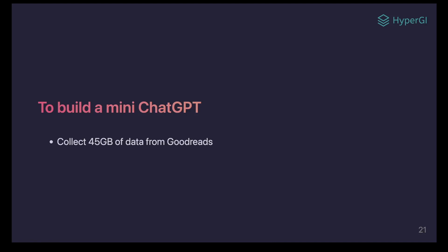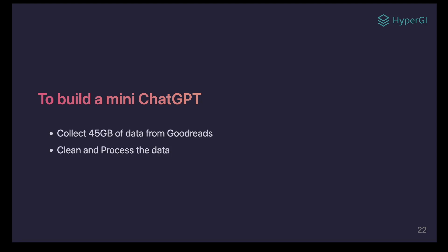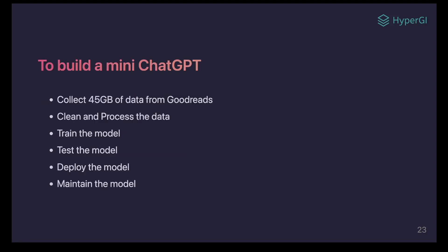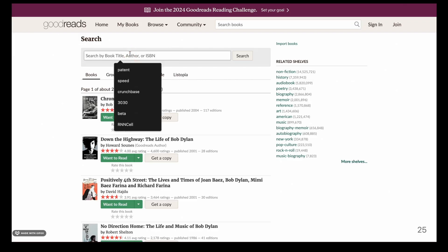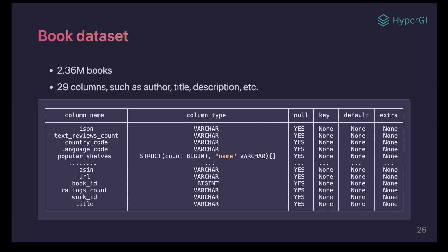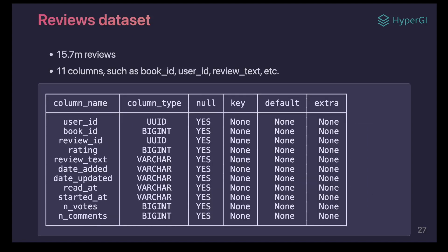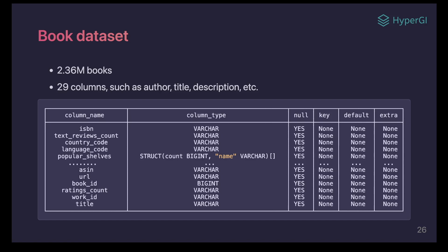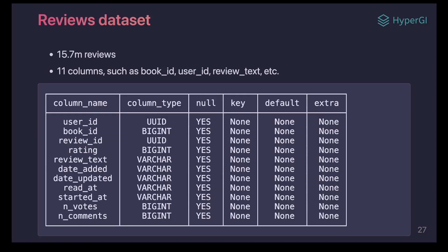To build a mini-ChatGPT model, I need to first collect the data. I chose to collect text from goodreads.com. As shown in the animation, I scraped Goodreads and got all the public book information. In the end, I got around 2.36 million books with 29 columns such as author, title, and rating. The size of the data is around 1.9 GB compressed and around 8 GB uncompressed. I also collected 557 million reviews from goodreads.com, which is around 7 GB compressed and 30 GB uncompressed. Each book could have many reviews.